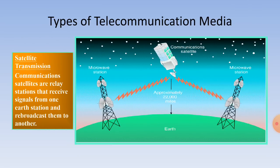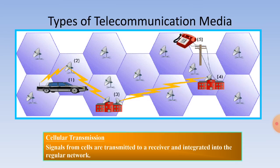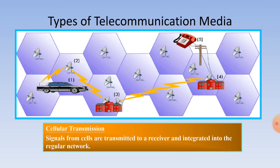Satellite transmission is a communication method where satellites are relay stations that receive signals from one Earth station and broadcast them to another. Cellular transmission: signals from cells are transmitted to a receiver and integrated into the regular network.